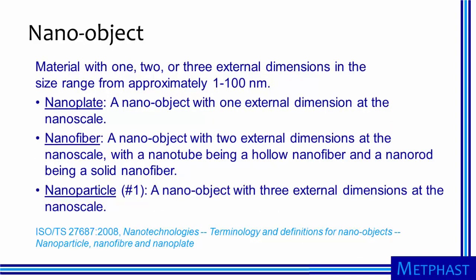The ISO standard defines a nano object as a material with one, two, or three external dimensions in the size range from approximately 1 to 100 nanometers. The standard goes further to define a nanoplate as a nano object with one external dimension at the nanoscale — we can think of this as being like a wafer or a flake, something very thin in one dimension but wide and flat in the other two dimensions. A nanofiber is a nano object with two external dimensions at the nanoscale, with nanotubes referring to hollow nanofibers and nanorods referring to solid nanofibers. So, nanofibers are long in one dimension while being very thin in the other two dimensions.